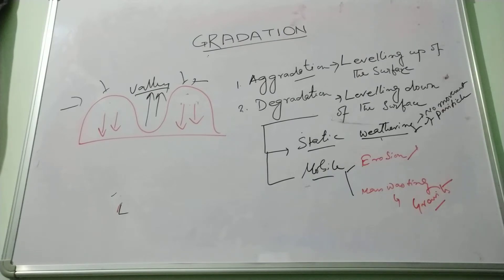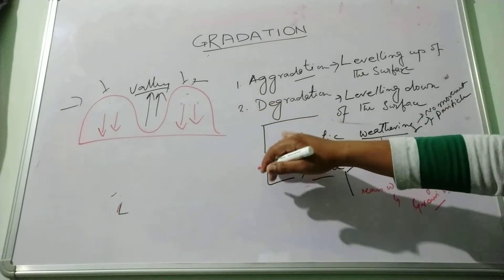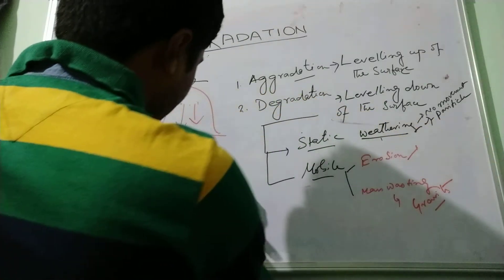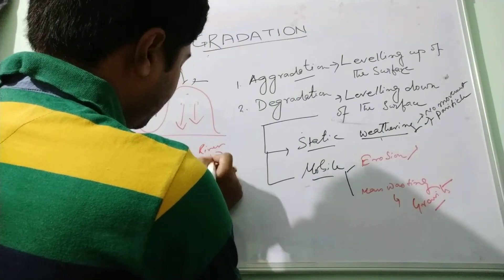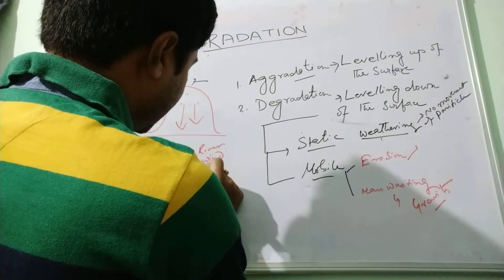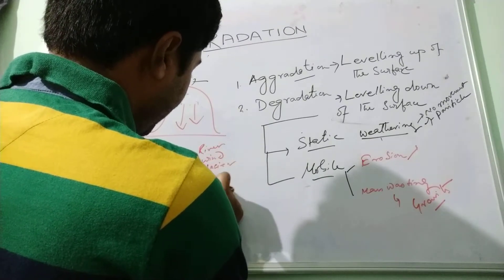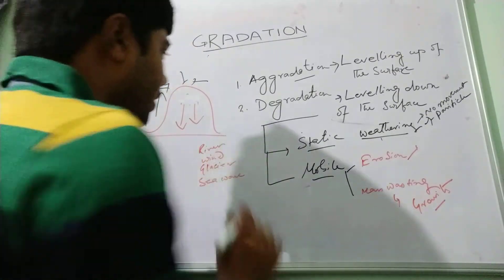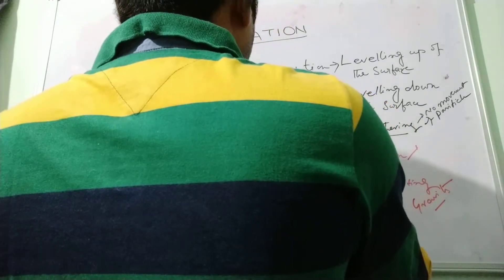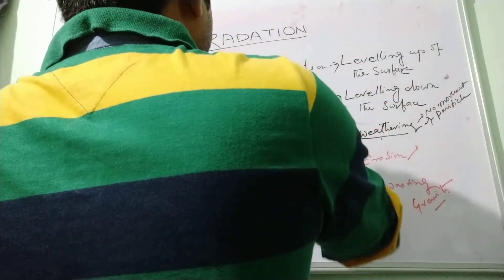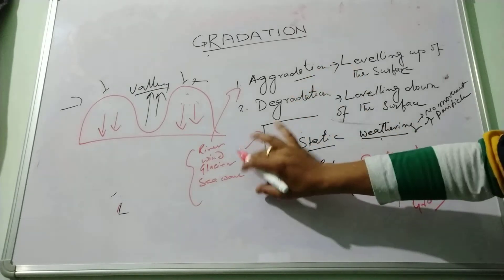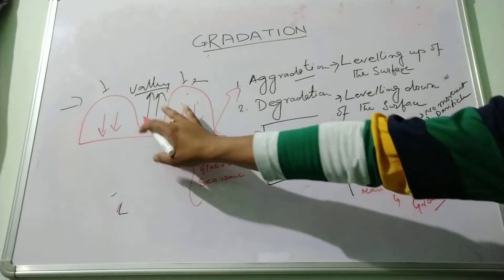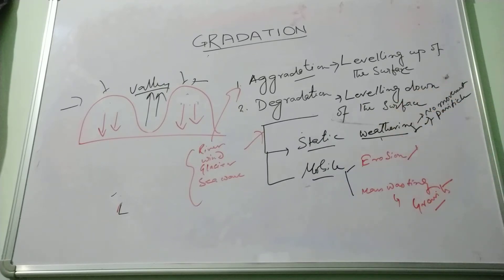So these processes that we discussed are caused by different agents like river, wind, glaciers, sea waves, and such. These are the agents that are helping the degradation process. And the same processes are also helping the aggradation process. The material that is degraded by this process is deposited into the valley and helps in the aggradation process.